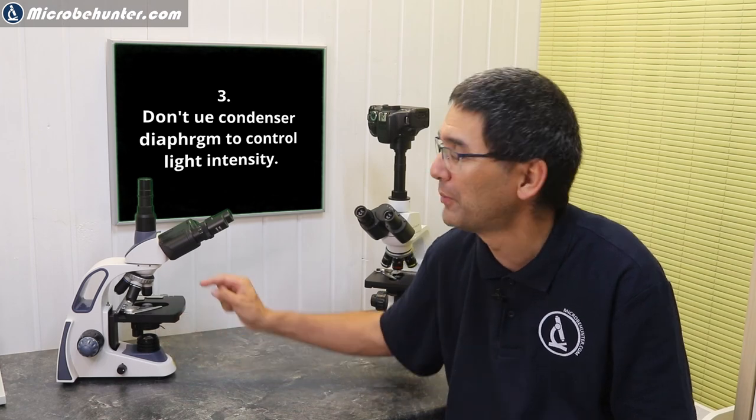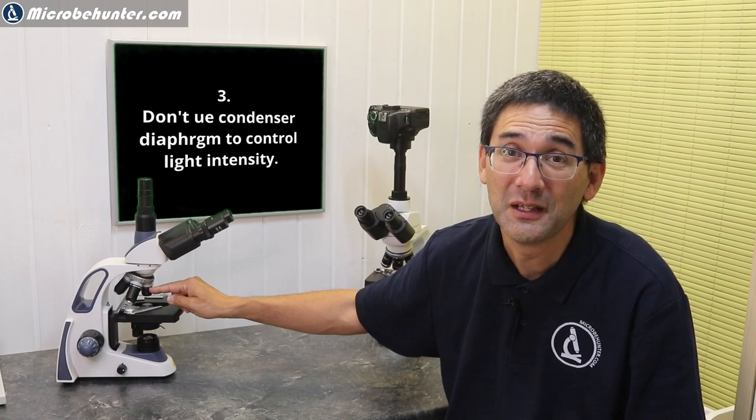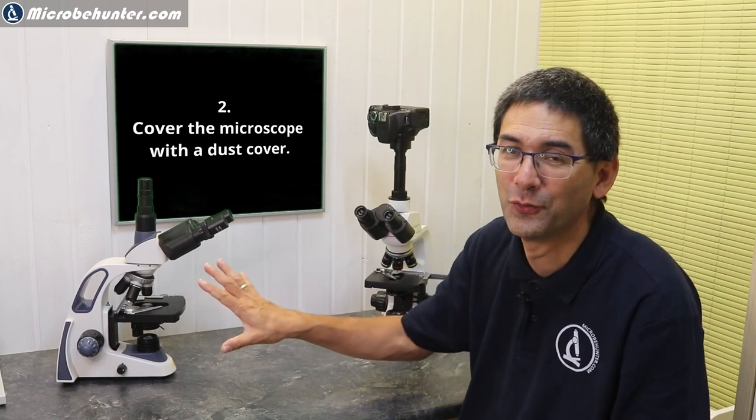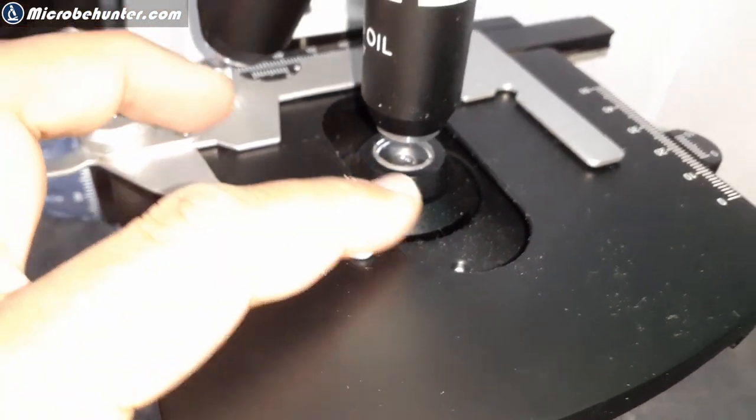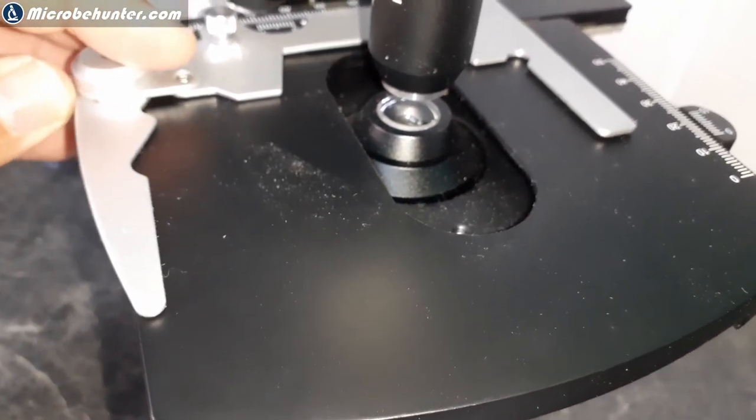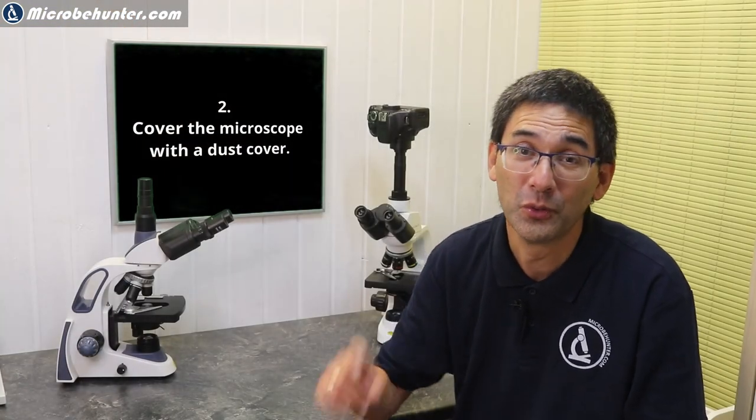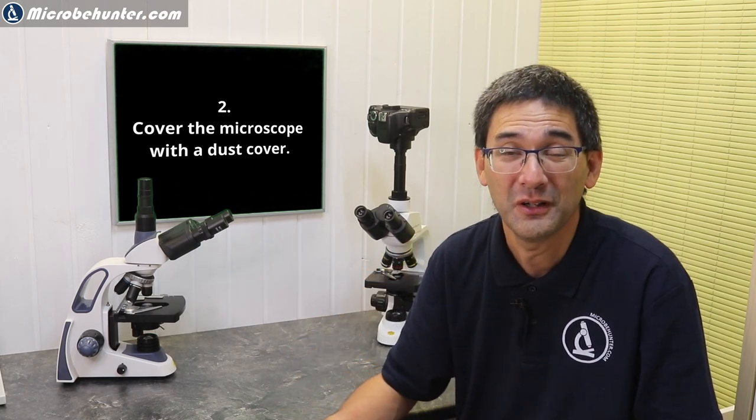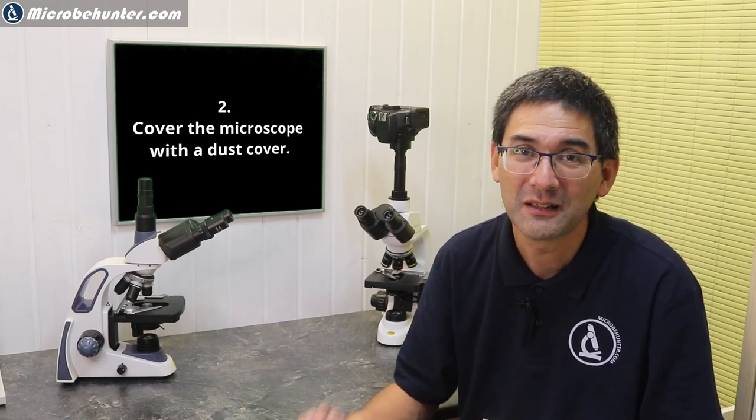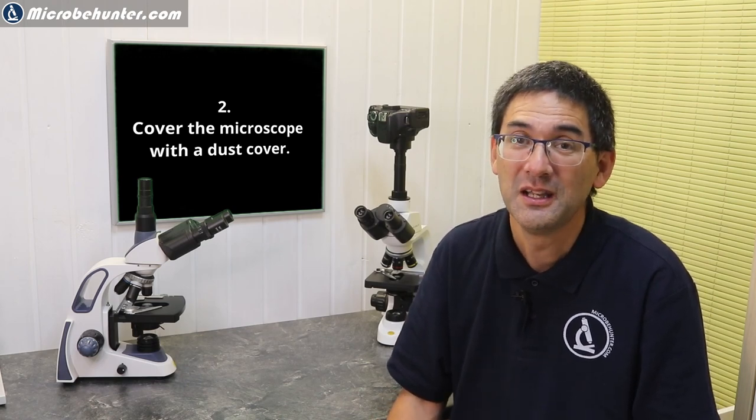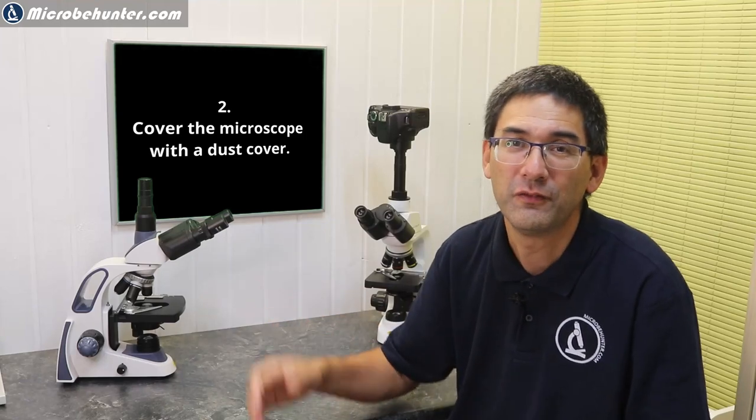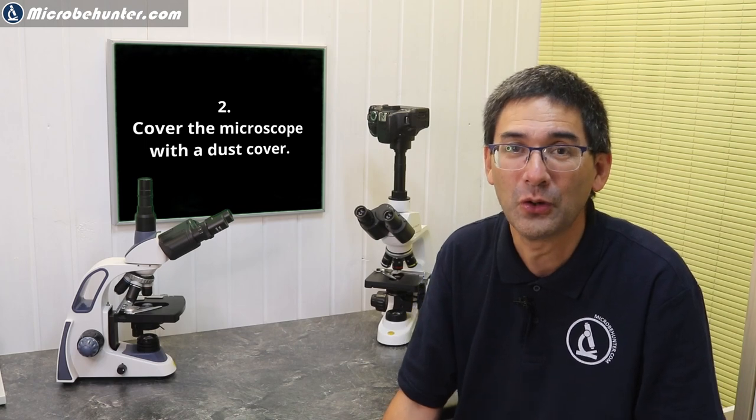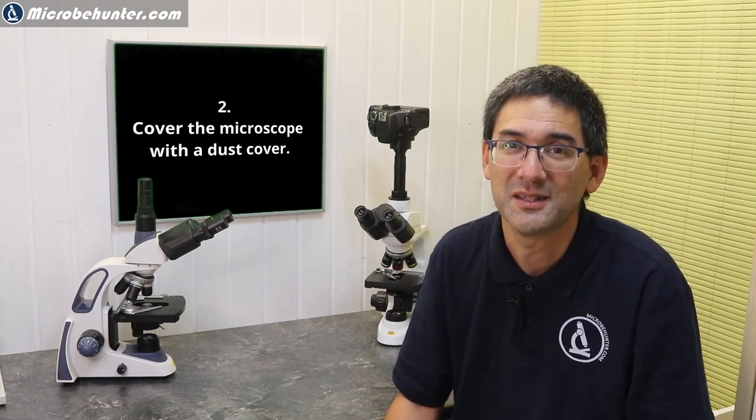Mistake number two: not keeping your microscope covered. Dust is one of the biggest enemies of a microscope. If there's dust on the condenser system or eyepieces, it can reduce image quality significantly. My suggestion is to use clean compressed air—not commercial cans used for computers, as they contain additives. You can also use a brush or a small bulb to blow off dust. It's not always necessary to use alcohol, but simply removing excess dust helps. Keep it covered to prevent dust in the first place.